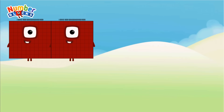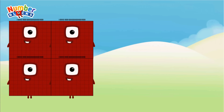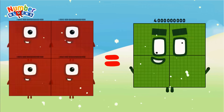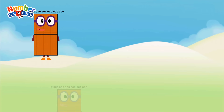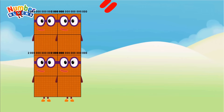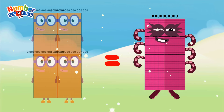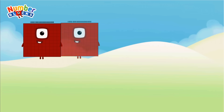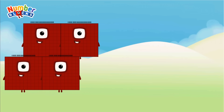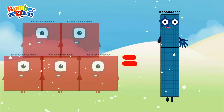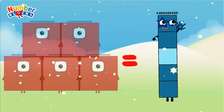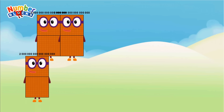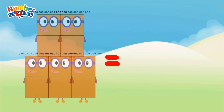1 quintillion plus 1 quintillion plus 1 quintillion plus 1 quintillion equals 4 quintillion. 2 quintillion plus 2 quintillion plus 2 quintillion plus 2 quintillion equals 8 quintillion. 1 quintillion plus 1 quintillion plus 1 quintillion plus 1 quintillion plus 1 quintillion equals 5 quintillion. 2 quintillion plus 2 quintillion plus 2 quintillion plus 2 quintillion plus 2 quintillion equals 10 quintillion.